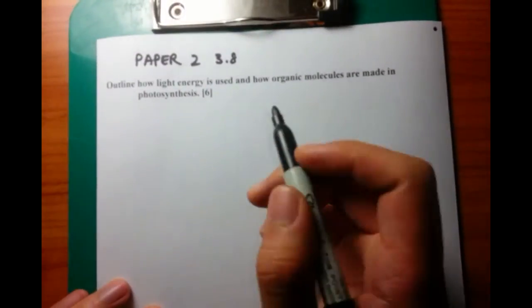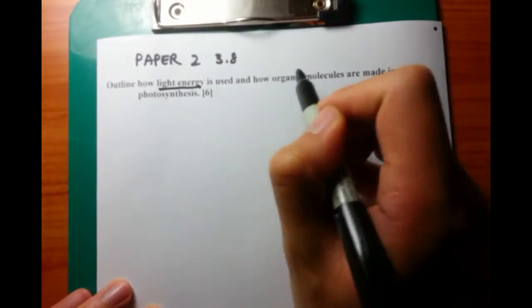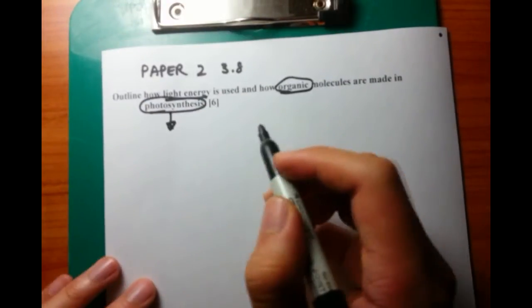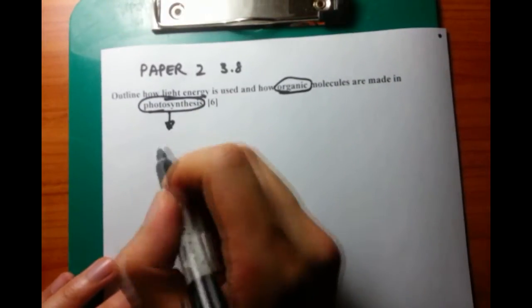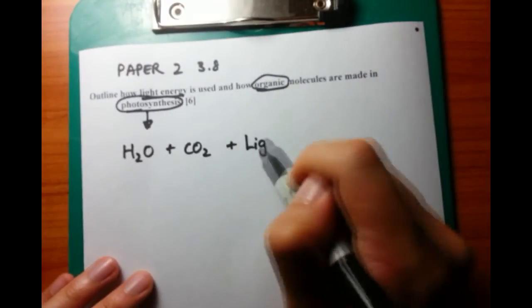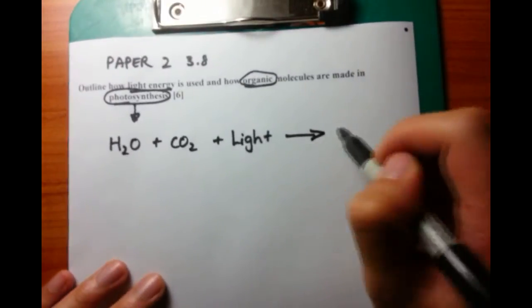Today we're going to look at this question: outline how light energy is used and how organic molecules are made in photosynthesis. The way I'm going to approach this is by first defining the key terms, organic as well as photosynthesis.